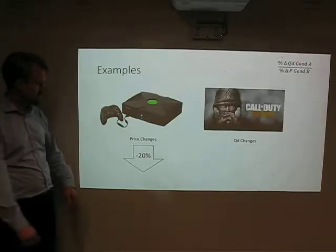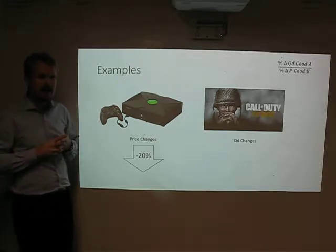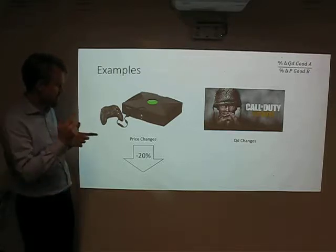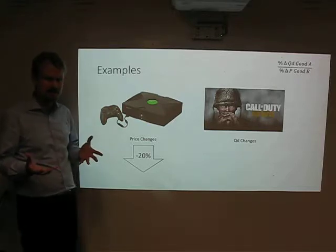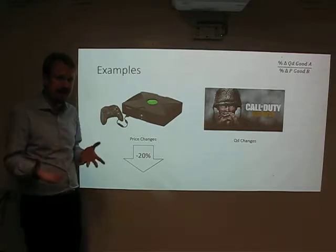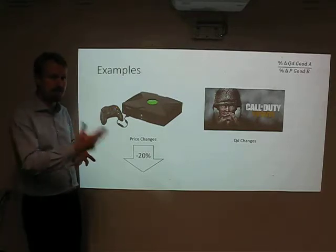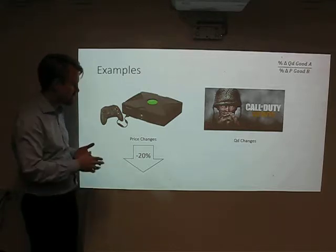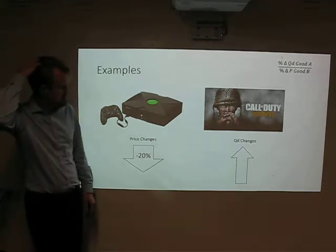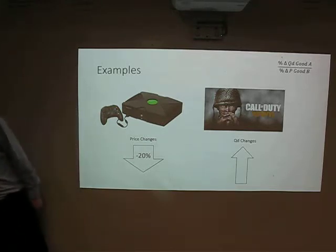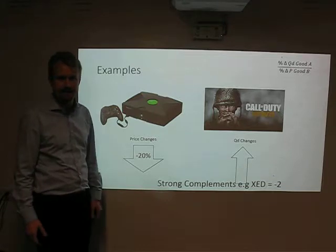Next, Xbox. If it changes in price by 20%, what's going to happen to the demand for Call of Duty? They're complementary products. I'm imagining that if Xbox goes down by 20%, more people are going to buy the Xbox, and if you buy an Xbox, you're almost certainly going to buy Call of Duty because it's a very popular game. I think Call of Duty is going to go up by a greater than proportional increase than 20%. We could therefore say they are strong complements, with an XED figure of something like minus 2.